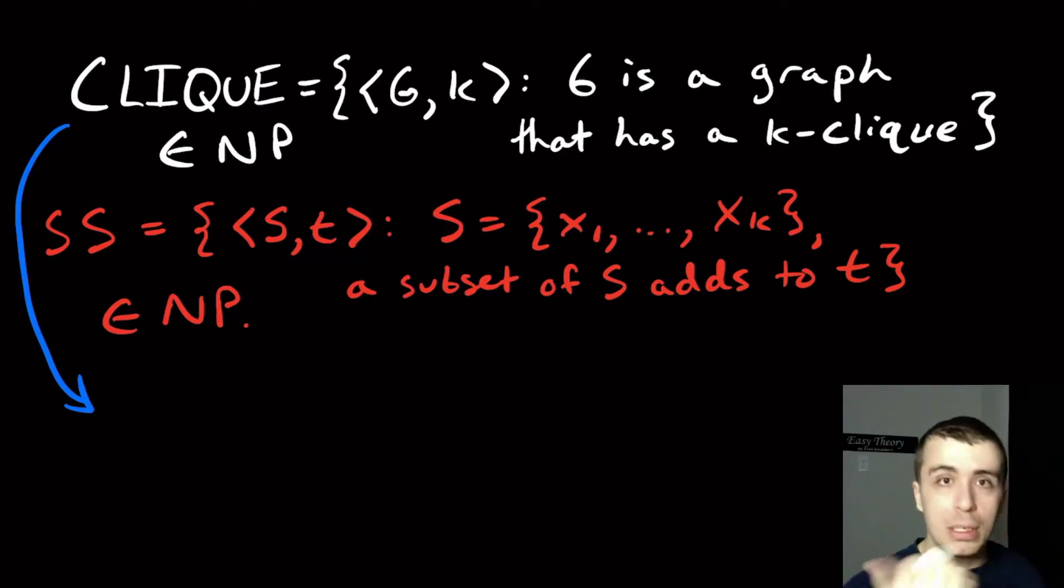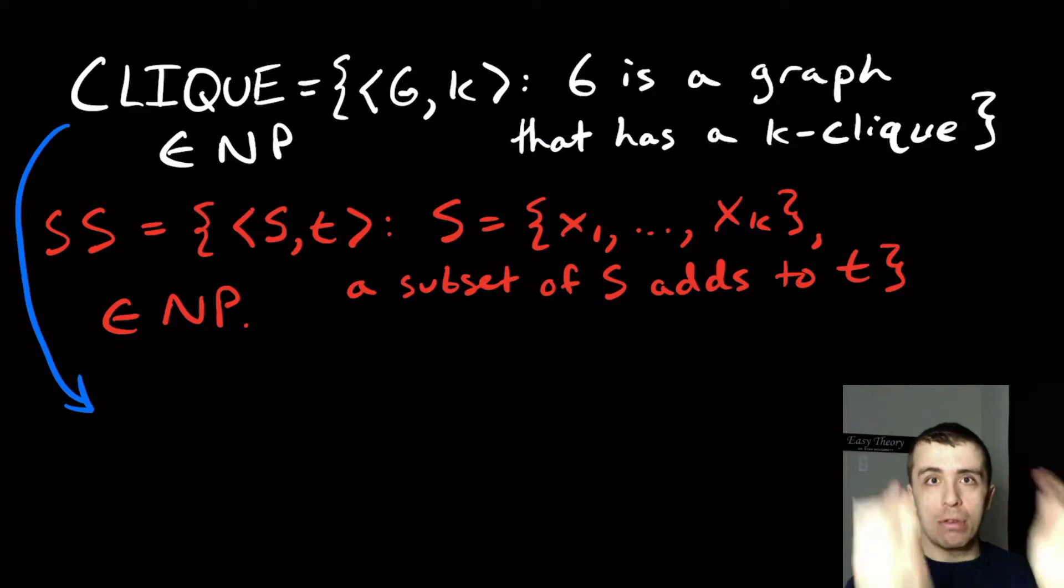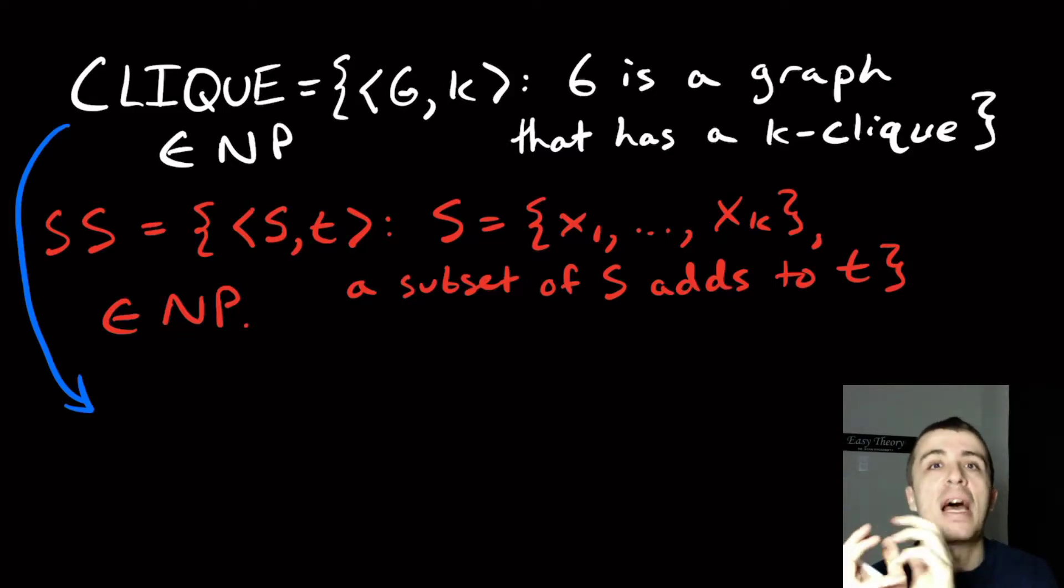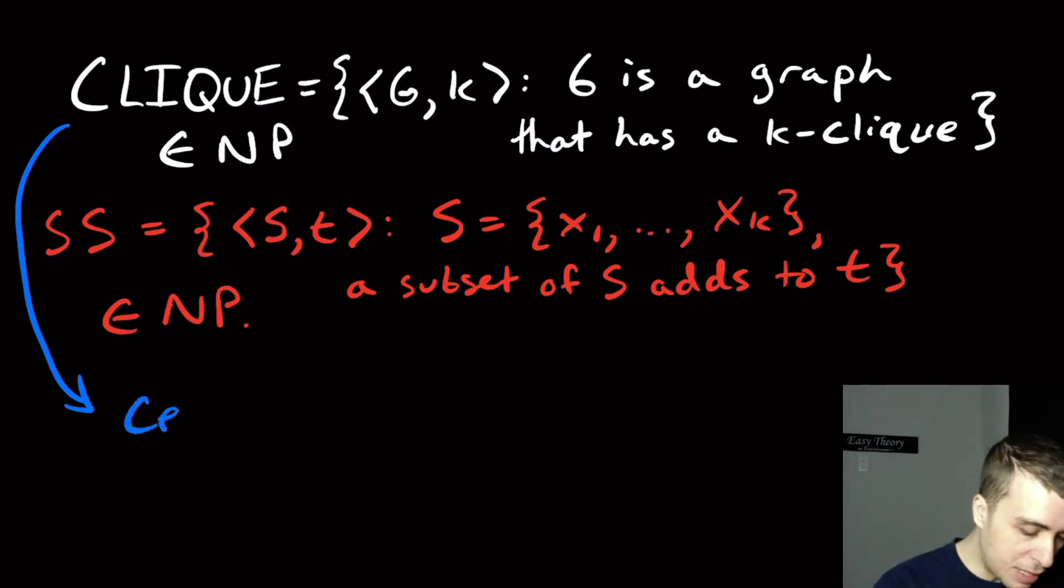So what would a certificate be? If I give you a graph and this integer k, what would be a proof or a certificate to show that that graph and that number k are in CLIQUE? In other words, the graph has that k-clique, the number that you're given. So the certificate here is going to be a set of k vertices.